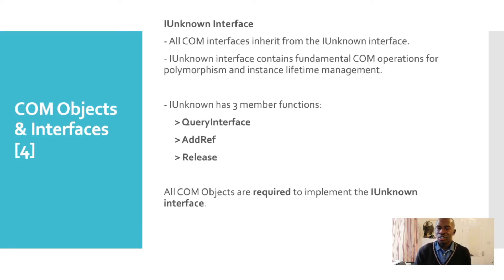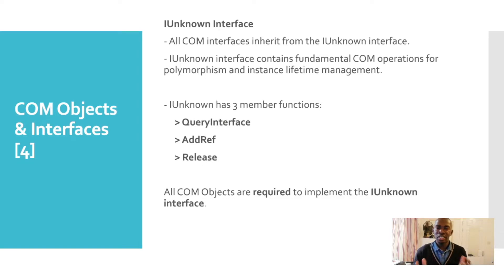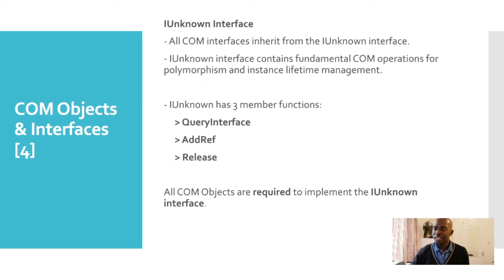It's quite important for us to understand the IUnknown interface. All COM interfaces inherit from the IUnknown interface. The IUnknown interface contains fundamental COM operations for polymorphism and instance lifetime management. The IUnknown interface has three member functions: QueryInterface, AddRef, and Release. These are three fundamental member functions that the IUnknown interface exposes, and all COM objects must have some form of implementation that can call these functionalities. All COM objects are required to implement the IUnknown interface.